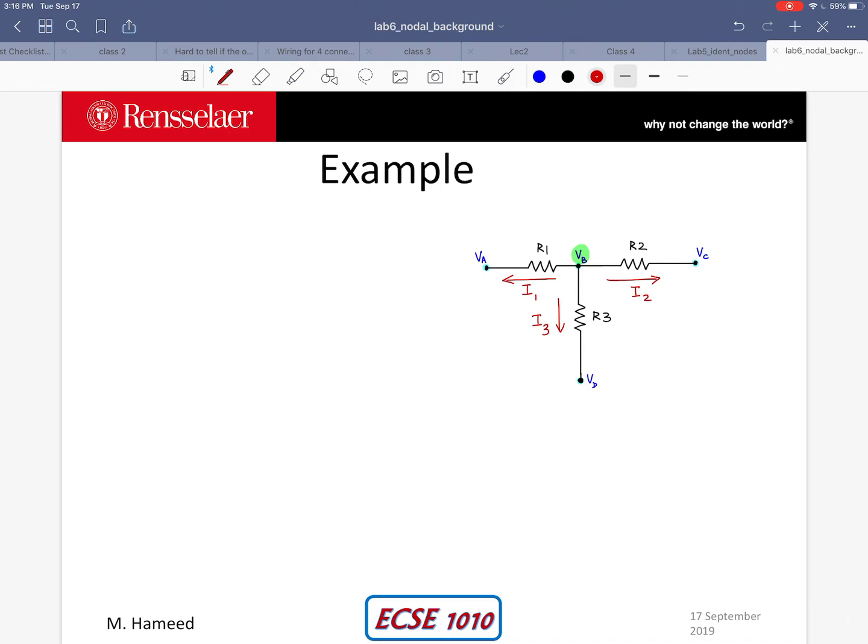Now I can use Ohm's law to write an equation for I1. I1 is simply the current that is flowing through resistor R1. So it should equal the potential difference across R1, which in this case should be VB minus VA. VB minus VA current entering the positive terminal divided by the resistance value R1.